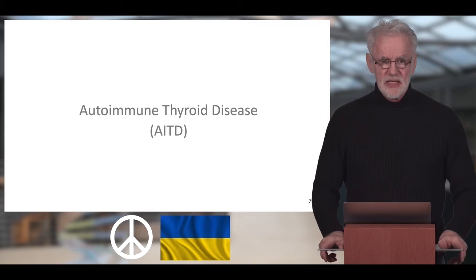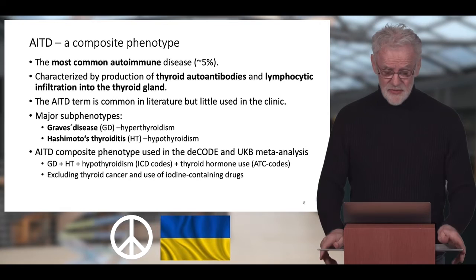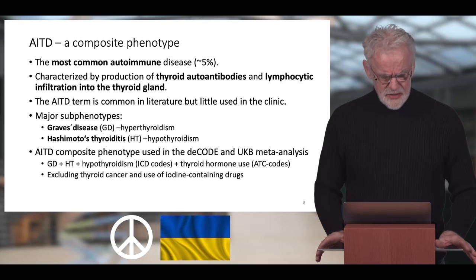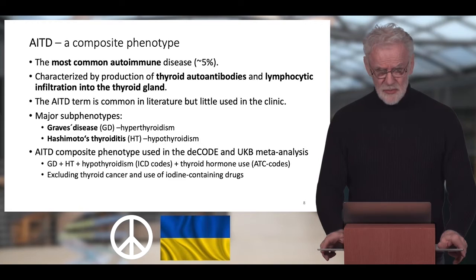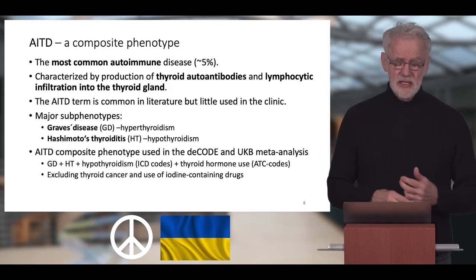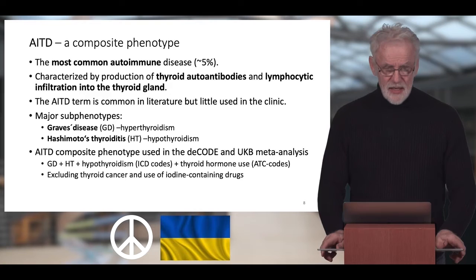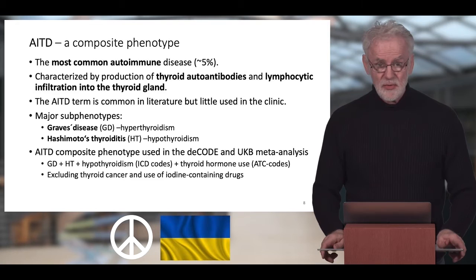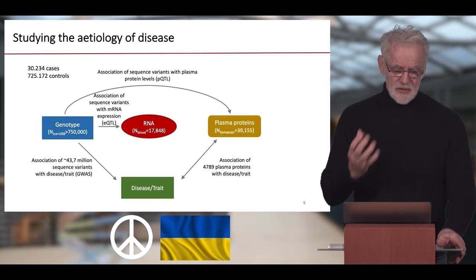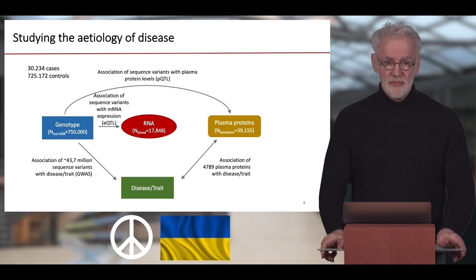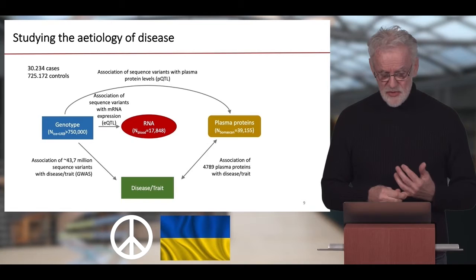I'm going to give you one example of a disease where we apply genomics, transcriptomics, and proteomics to shed light on the nature of the disease. The disease I'm taking as an example is autoimmune thyroid disease — the most common autoimmune disease of man, affecting about 5% of the population. It is characterized by thyroid autoantibodies and lymphocytic infiltration of the thyroid, and the major subtypes are Graves' disease and Hashimoto's thyroiditis.